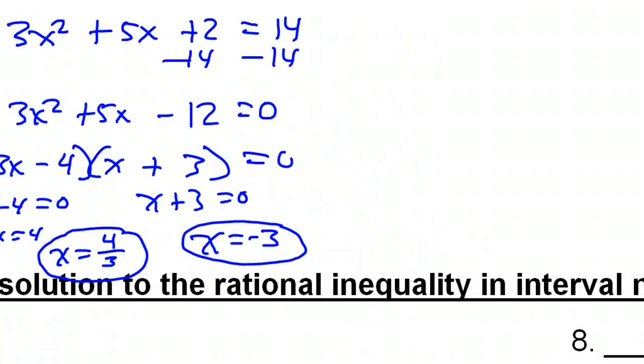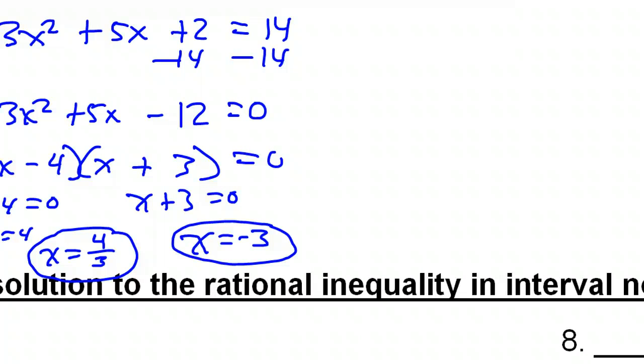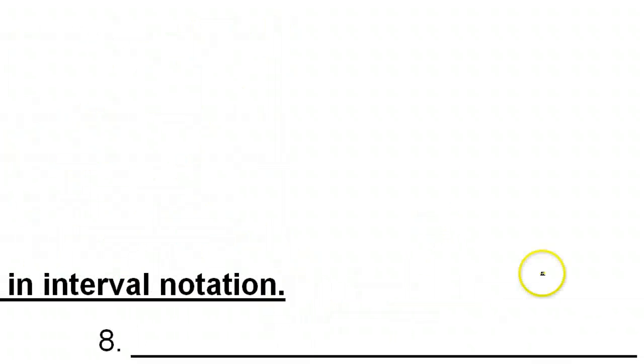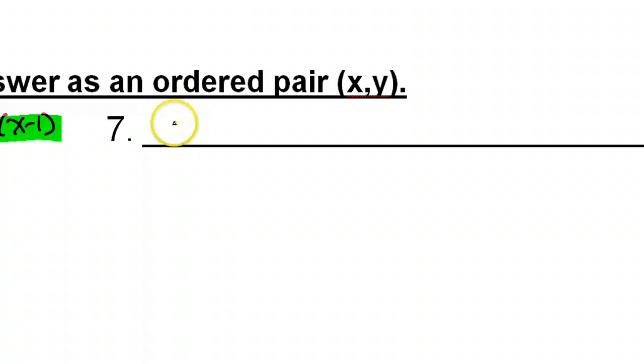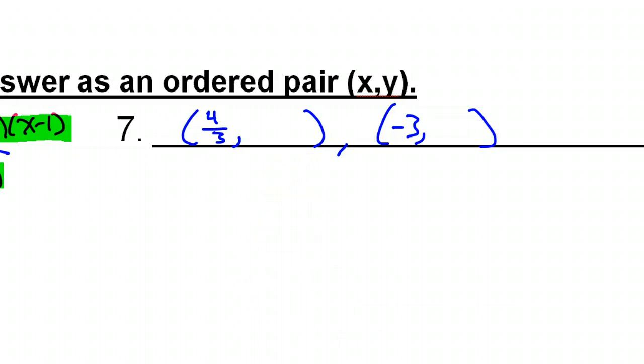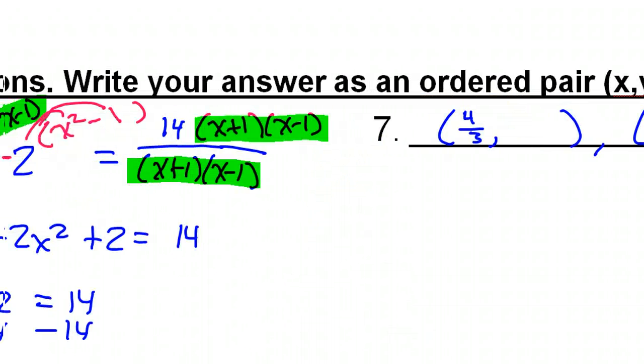So, I have these two x values. But, I need the y values that go with them. Alright? Ordered pairs. So, let's see. So, I have 4 over 3. And, I have negative 3. Alright. So, I have 4 over 3. And, I have negative 3. So, it's 4 over 3 comma something. And, I have negative 3 comma something. Alright? These are x values. I need to find the y values that go with them. So, how will I get the y values?